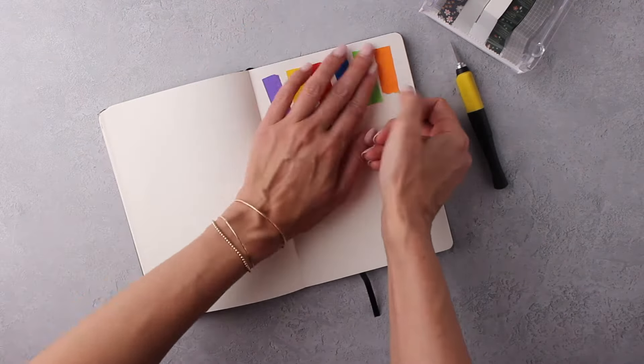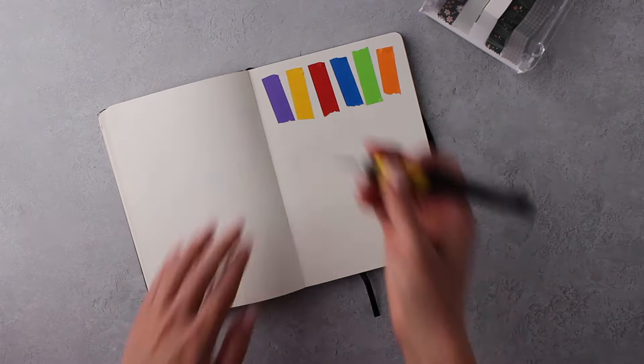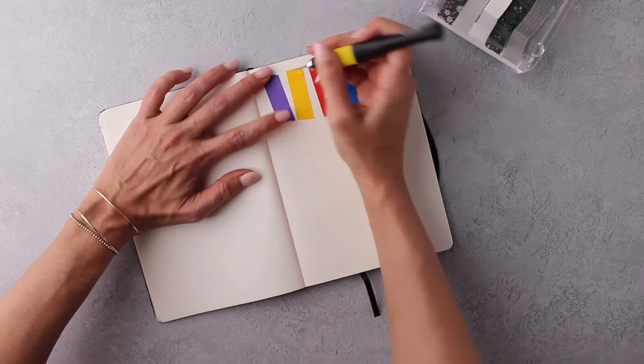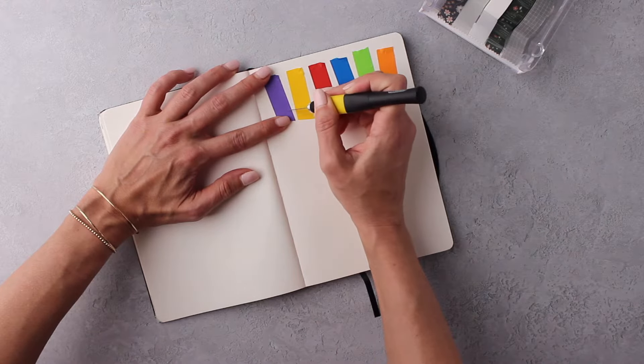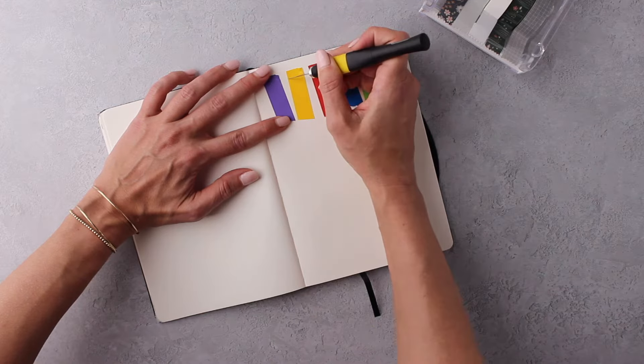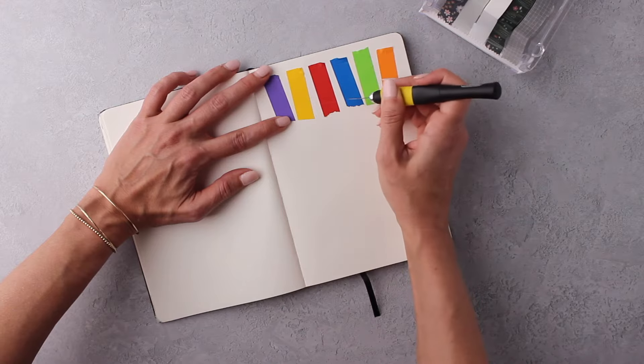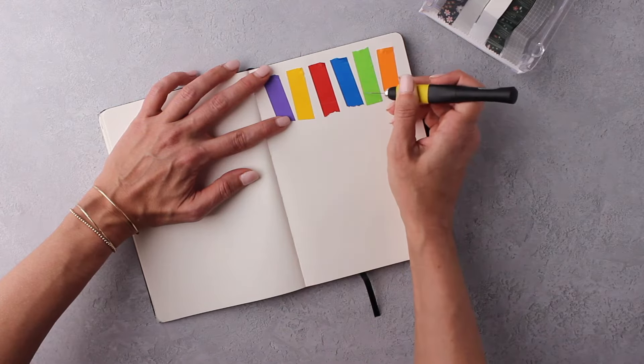That is what is so great about washi tape—you can pick it up and reposition it. Now I'm going to take my exacto and clean up the edges of where I tore the washi by doing some varying lines. Some are going up, some are going down, just to give it a little bit of interest which you will see once I peel the tape up. How cute and how playful this little banner is.